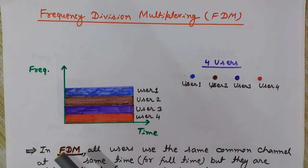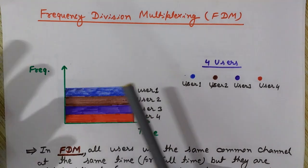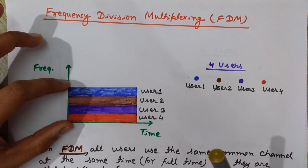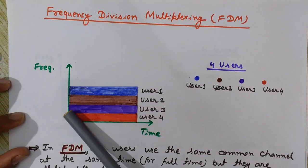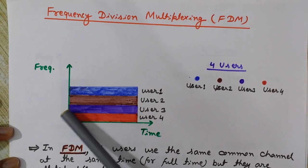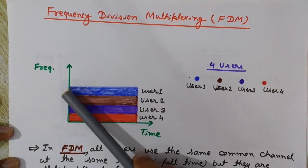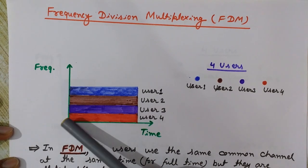In FDM, all users use the same common channel at the same time — for the full time duration. The total frequency bandwidth available is divided among these four users. Each band is allocated to a specific user: one band for user four, one for user three, one for user two, and one for user one.